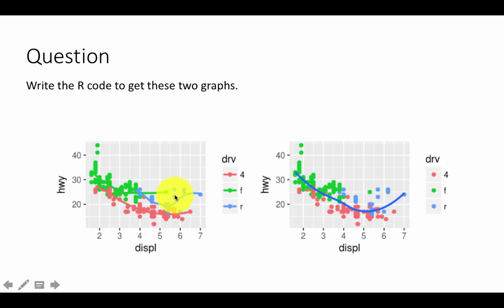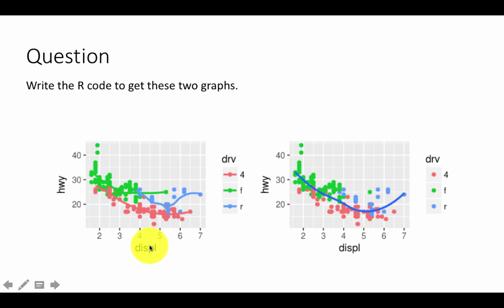...we can clearly write: ggplot(data = mpg) and in the aesthetics say x = displacement, y = highway, and also color = drive within the aesthetics. That's because the color aesthetic is the same for both geoms — geom_point and geom_smooth. So we put everything inside the ggplot call, then simply add geom_point and geom_smooth, except in geom_point we increase the size and in geom_smooth we say se = FALSE because we don't have confidence intervals.